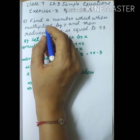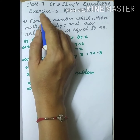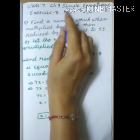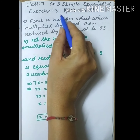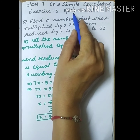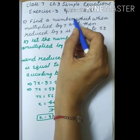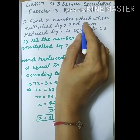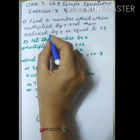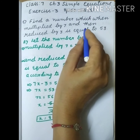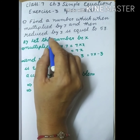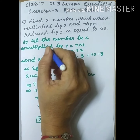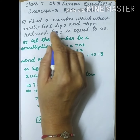Good morning children. Today we are discussing Class 7 Chapter 3 Simple Equations, Exercise 3, page number 67, question number 5. Find a number which when multiplied by 7 and then reduced by 3 is equal to 53. First, try to understand the question.